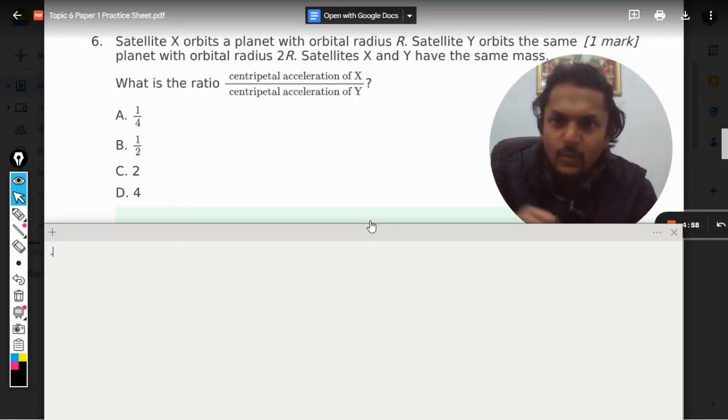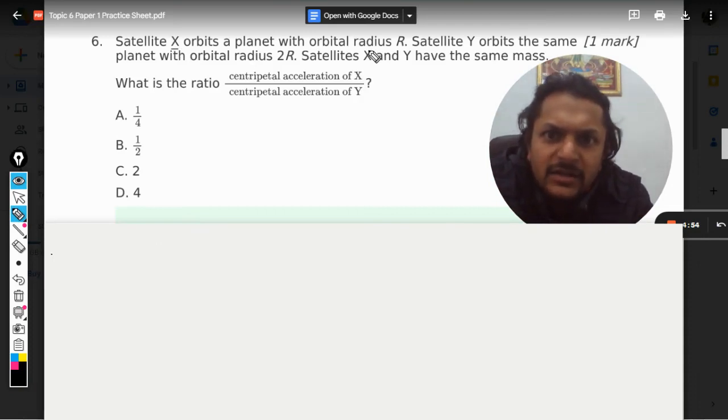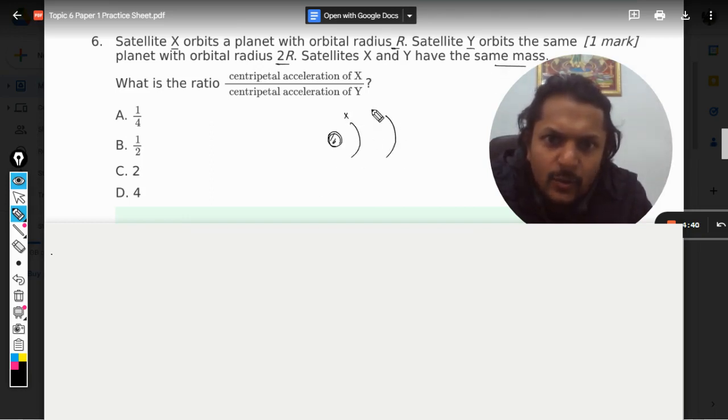Okay dear students, let us see what is there in this question. Satellite X orbits a planet with orbital radius r, and satellite Y orbits the same planet with orbital radius 2r. The satellites X and Y have the same mass. So this is the planet, these are the two satellites, one is X, another is Y. This distance is 2r and this distance is r.